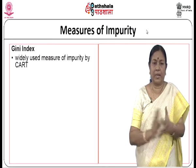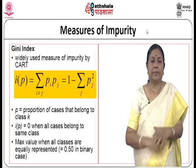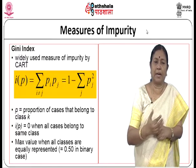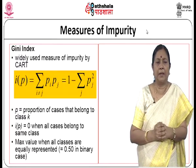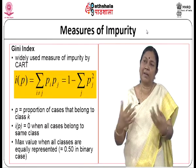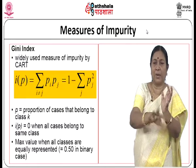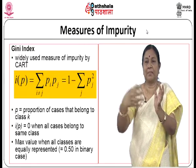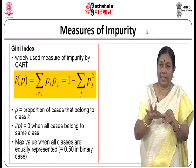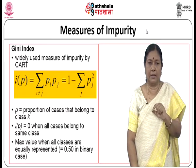There are different measures of impurity. Misclassification rate is not normally used because no split may improve it even when one option is clearly better. Information or entropy is commonly used: if a node has a proportion p_j of each of the classes, the information entropy is I(p_j) = −Σ p_j log p_j, where p_1, p_2, ..., p_n are proportions of cases belonging to each class k. Entropy ranges between 0 (most pure) and log₂(m) (equal representation of all m classes).